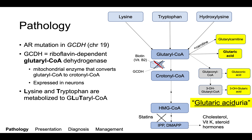So when we have an absence of GCDH, as shown here, what we get is a buildup of glutaryl-CoA, which then reacts with a variety of substrates to generate the metabolites that we see in the blood and the urine. Primarily, glutaryl-CoA is converted to glutaric acid. It can also react with carnitine in the body to form glutarylcarnitine. Other metabolites that can be seen in the urine are glutaconic acid and 3-hydroxyglutaric acid. This is where the name glutaric aciduria comes from — glutaric acid in the name, and "uria" refers to the urine where we see a lot of these metabolites.